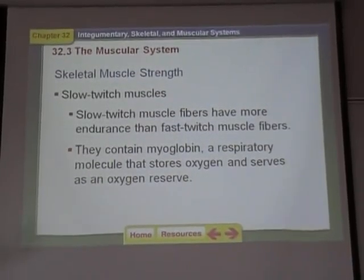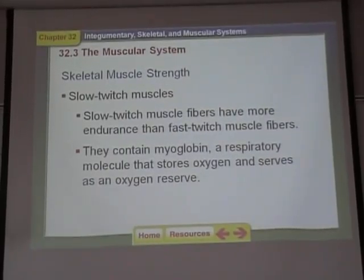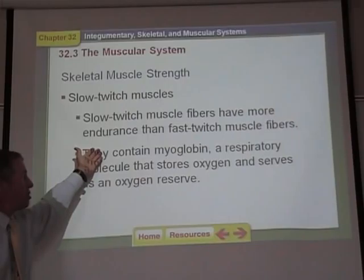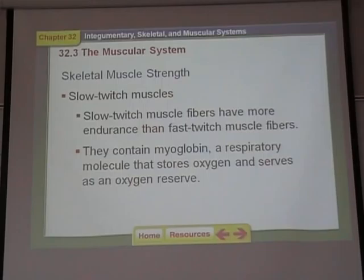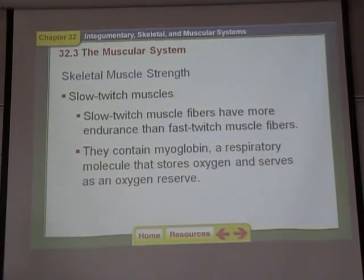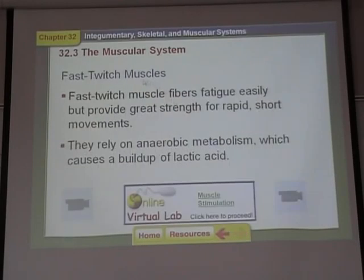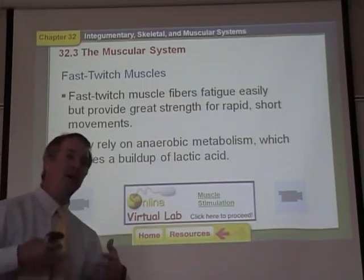The last thing the book talks about is fast twitch and slow twitch muscles. Slow twitch muscle fibers have more endurance than fast twitch fibers, and they have myoglobin — a molecule that holds oxygen — so slow twitch fibers don't get tired as quickly. Fast twitch fibers move really quickly but don't have myoglobin.